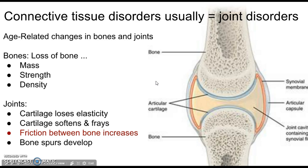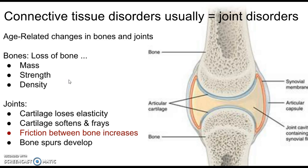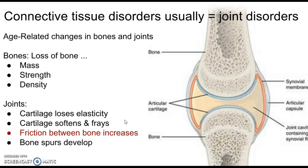Age-related changes happen in bones and joints. Specific to bones, as we age we lose mass, strength, and density. Osteoporosis is directly related to this loss of bone density — our bones get lighter, less dense, and break more easily. In joints, as we age the cartilage loses its elasticity, softens, and frays. Instead of being smooth, it becomes jagged with rough edges, so it doesn't cushion or lubricate joints as well, and friction between the bones increases.